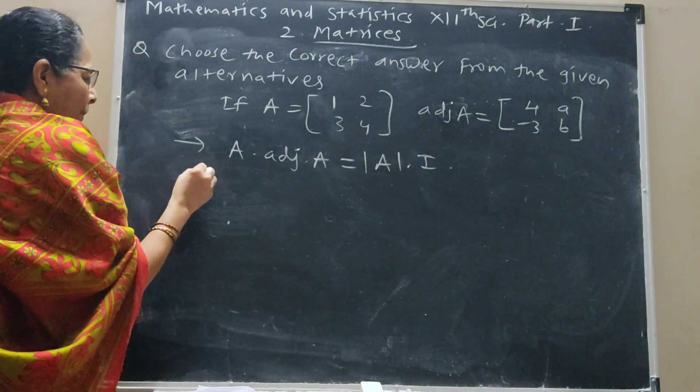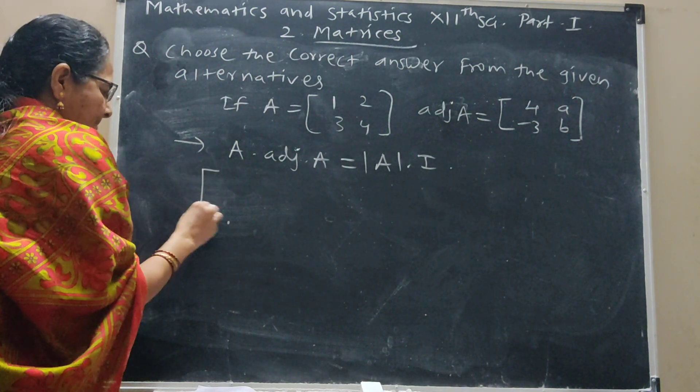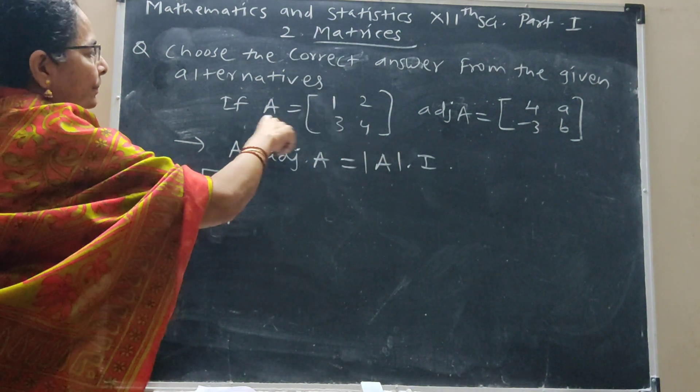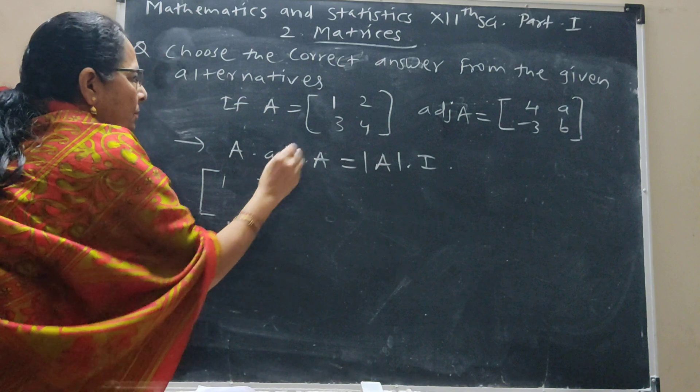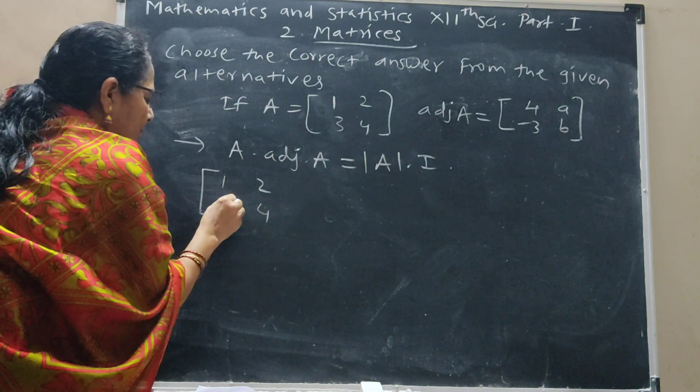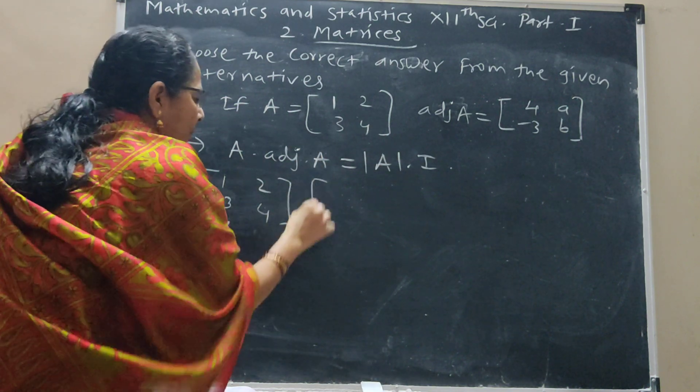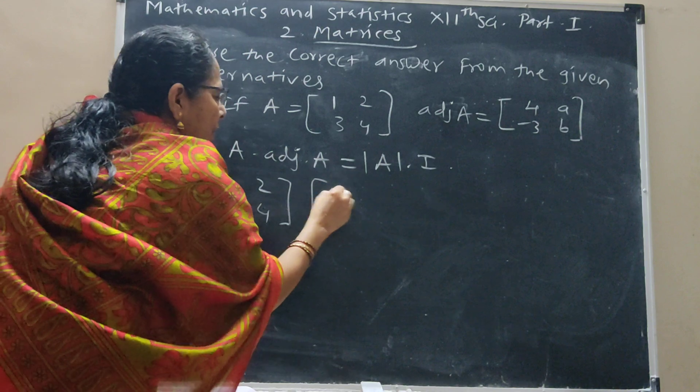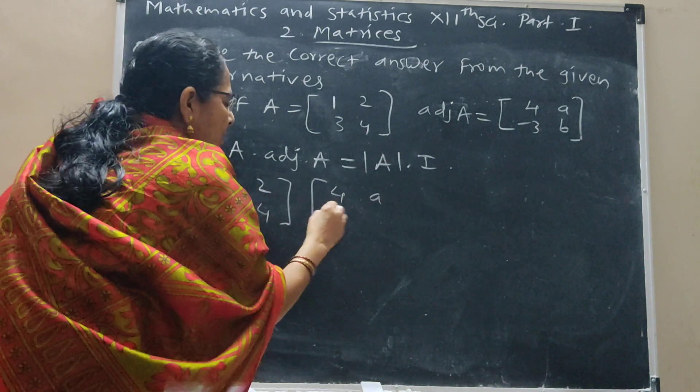We have matrix A, which is [1, 2; 3, 4]. Adjunct A is 4A minus 3B.